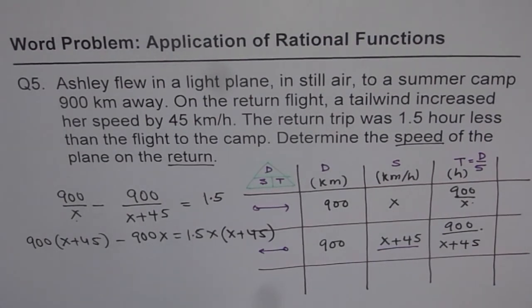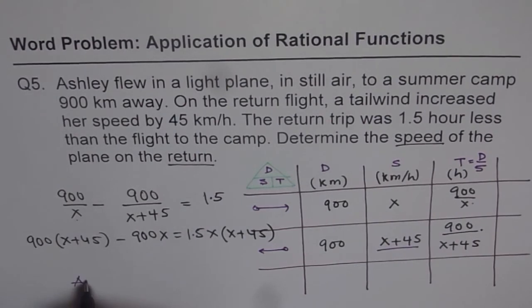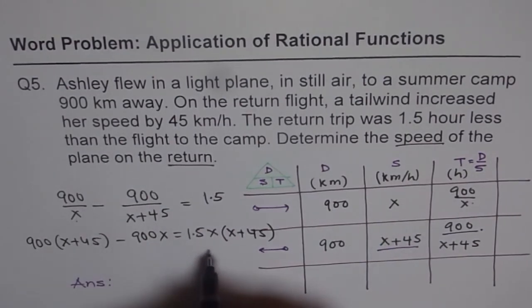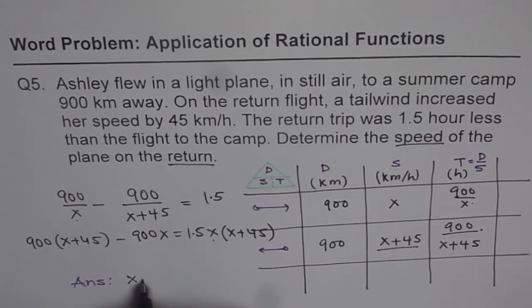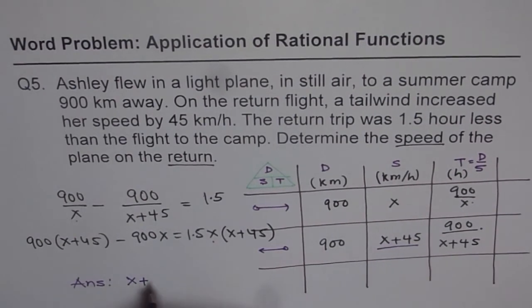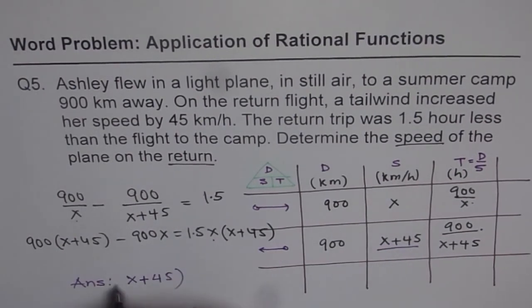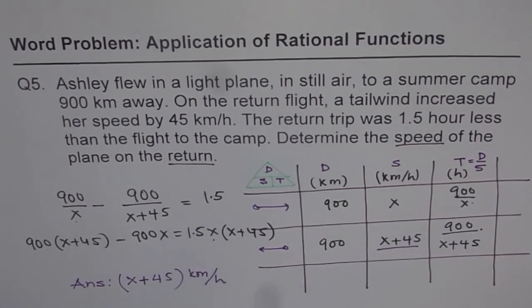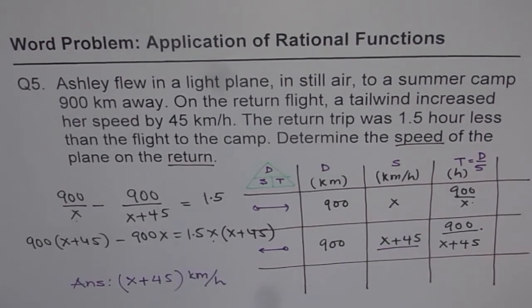And remember to write down answer with units. And what should be the answer? Return. So answer should, whatever value of x you find from here, write x plus 45 in kilometers per hour as your return speed.